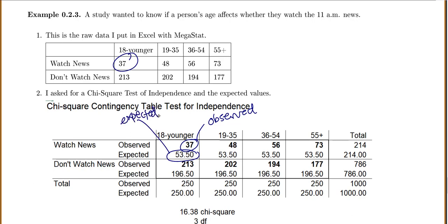So it's kind of nice, it gives me all of my expected values. There are more things it'll give you if you ask, but I do like to at least see the observed and expected. For 19 to 35 year olds, we observed 48. But if age and watching news were independent, we would have expected 53.